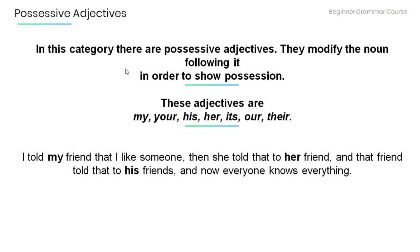In this category there are possessive adjectives, which modify the noun following them in order to show possession. These adjectives are: my, your, his, her, its, our, and their. For example: 'I told my friend that I like someone, then she told her friend, and that friend told his friend, and now everyone knows.' Here, 'my' modifies 'friend,' 'her' modifies 'friend,' and 'his' modifies 'friend.'